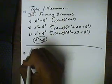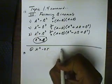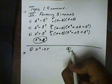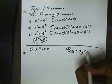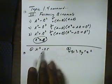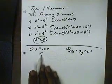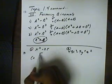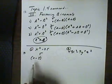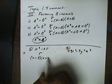Let's factor x squared minus 25. This looks like the difference of two squares. I'll check by seeing if everything simplifies under the square root — and it does, because the square root of x squared is x, and the square root of 25 is 5. So the factored form is (x minus 5)(x plus 5).